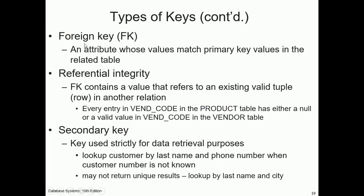Here is an example of a simple relational database with a product table and a vendor table. The column vendor code links the two tables — it is a primary key in the vendor table, and when placed in the product table to link them, it becomes a foreign key.